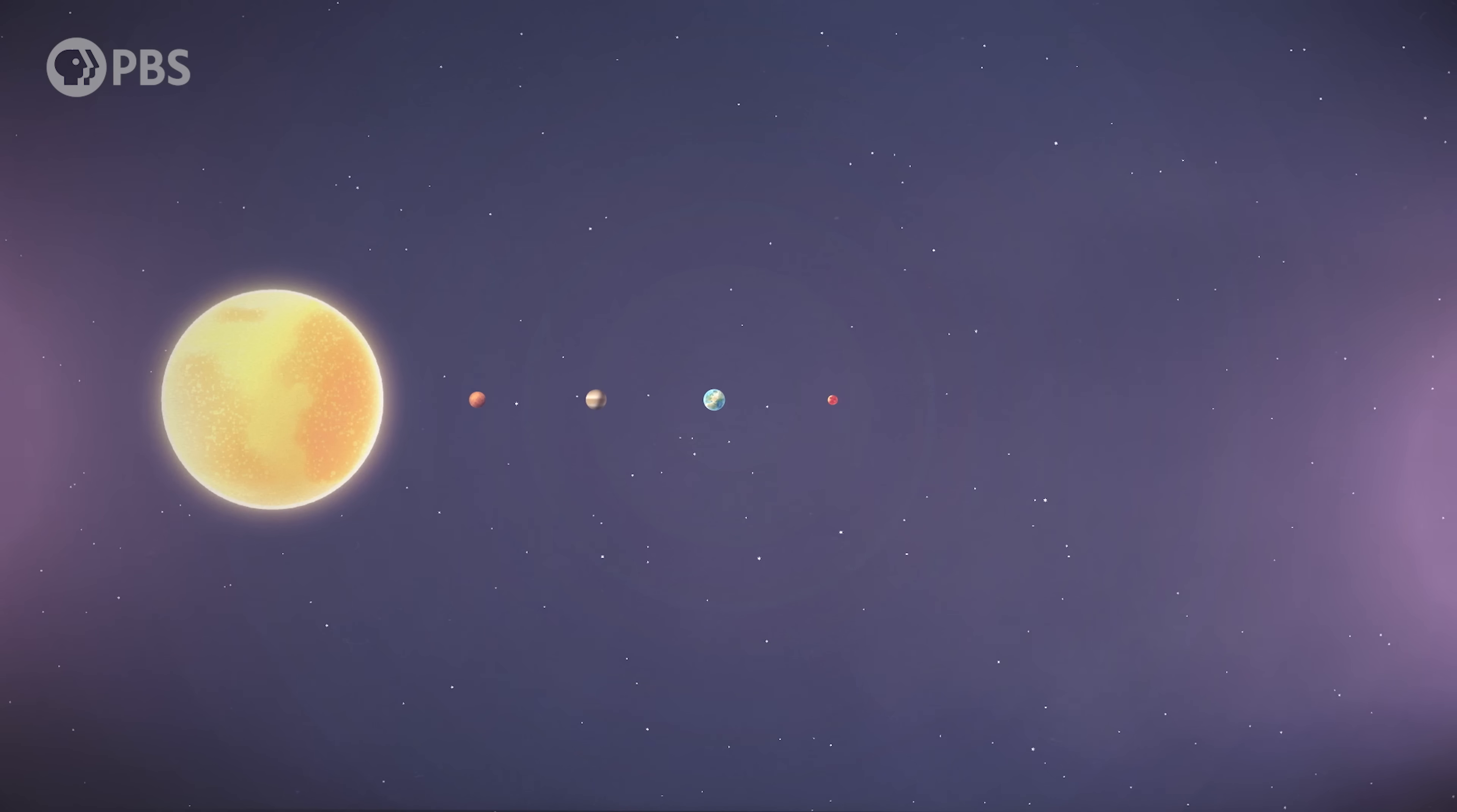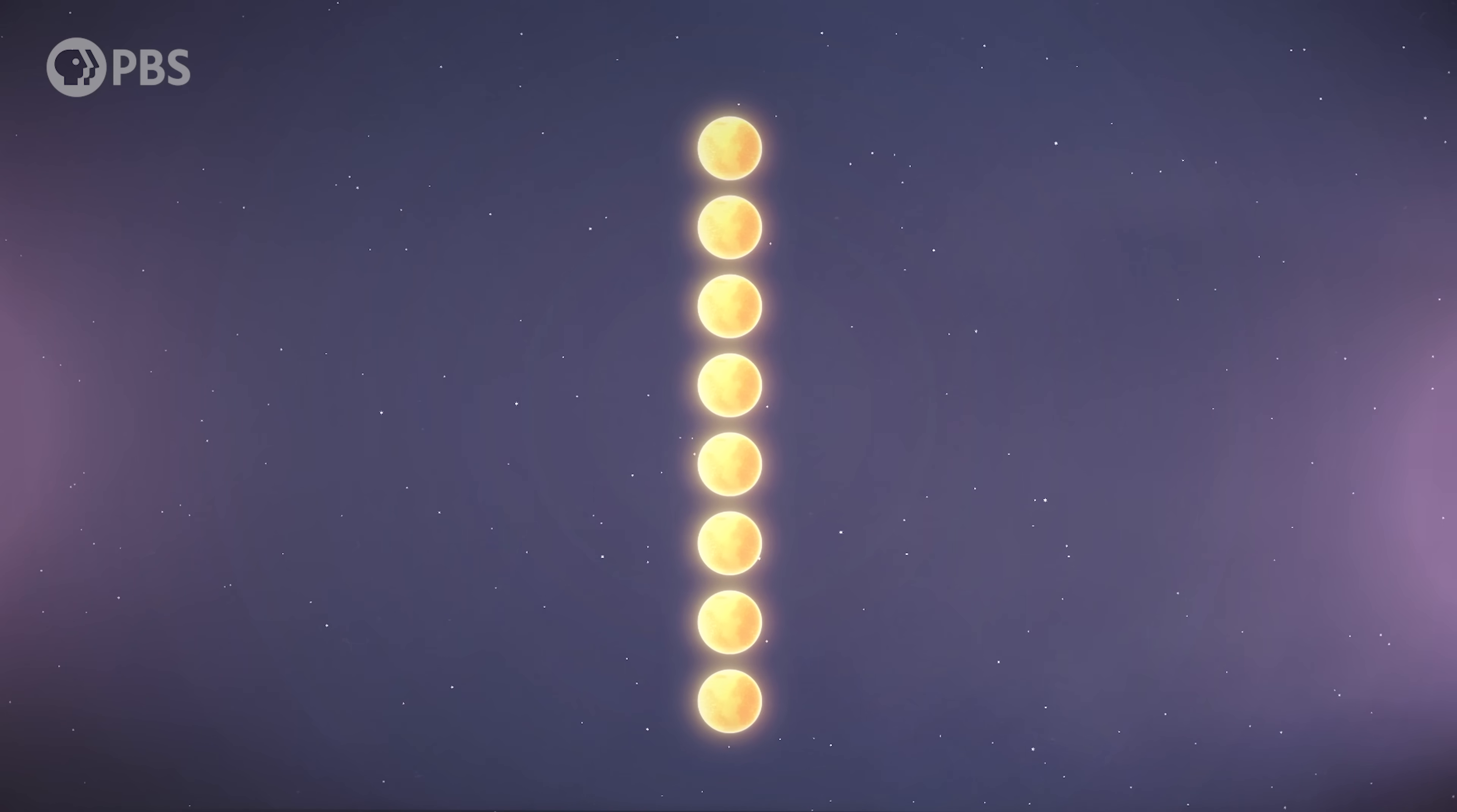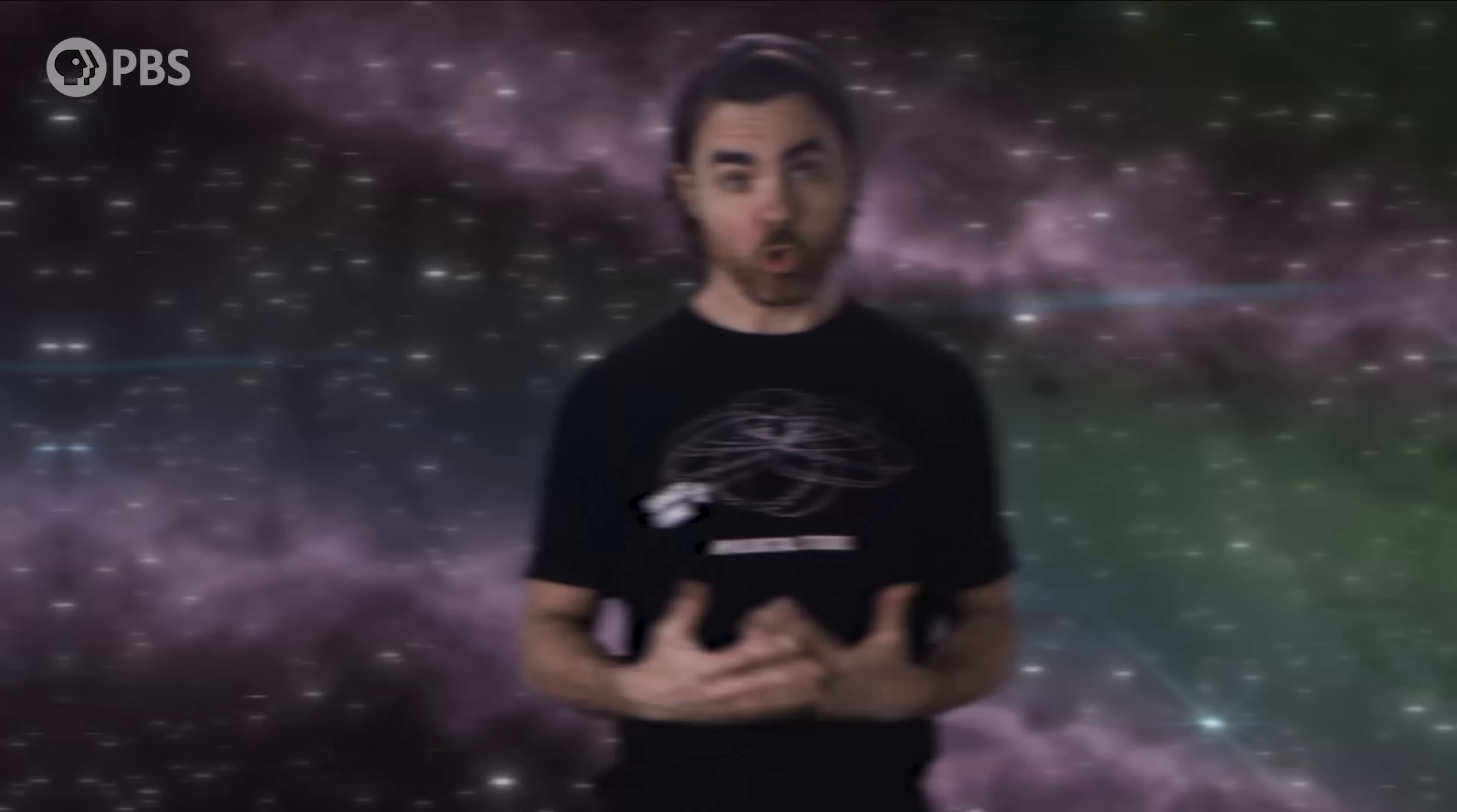Well, just because the three-body problem for the most part has no useful analytic solution, approximate solutions can be found. For example, if the bodies are far enough apart then we can approximate a many-body system as a series of two-body systems. For example, each planet of our solar system can be thought of as a separate two-body system with the sun.